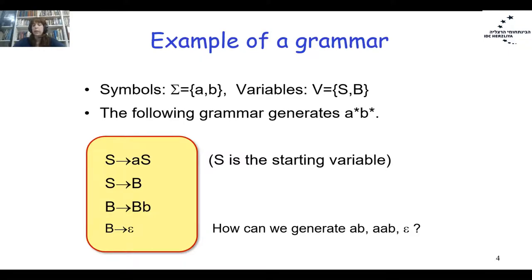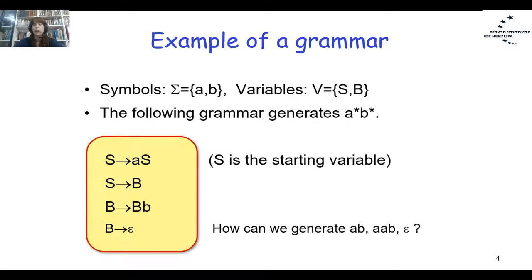To derive the empty word: start with S → B, then B → ε. To derive 'ab': start with S → aS, then S → B, then B → bB, and finally B → ε, giving the word 'ab'.